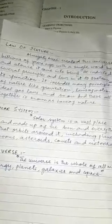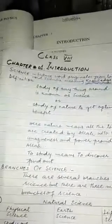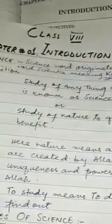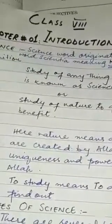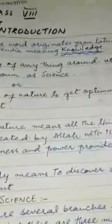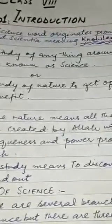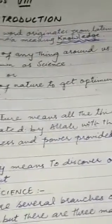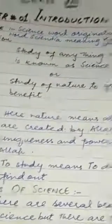Now, after natural philosophy, we come to the topic of science. Now, what is science? Science, which originates from Latin word scientia, means knowledge or to know. Science can be defined as study of anything around us is known as science or study of nature to get optimum benefit from the nature is known as science.